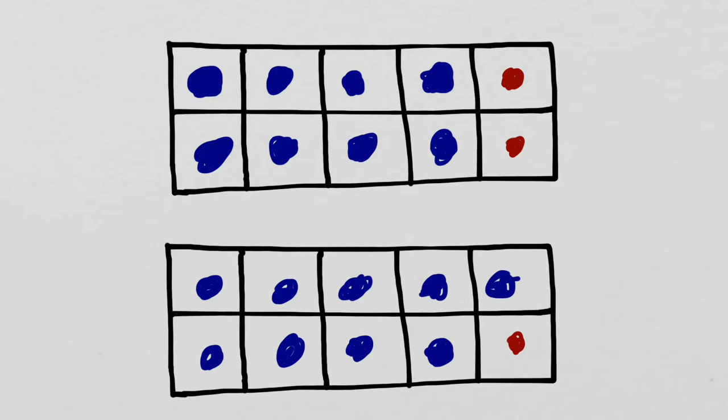You could use any number of strategies to think about that. I'm kind of thinking about making 10, because 20 is two 10s, and I know that 7 plus 3 is 10, so I'm going to say it's 17. There are other ways you could have done that, as well.